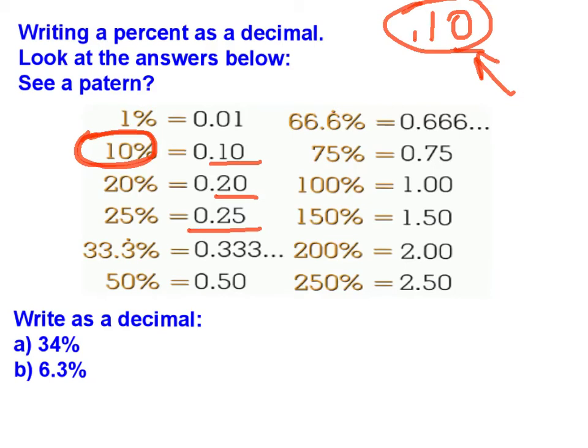Use the examples on this chart to write letter A as a decimal. 34%. Copy the problem and write your answer into your notes. Then we'll see how you did. Well, 34% means 34 out of 100. So I should have 34 hundredths. To write that as a decimal, it would be 0.34 because 34 is in the hundredths place. 34 hundredths.